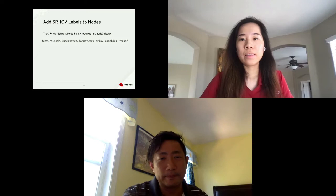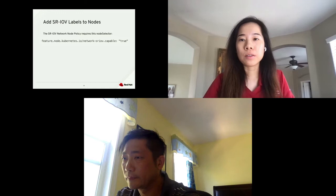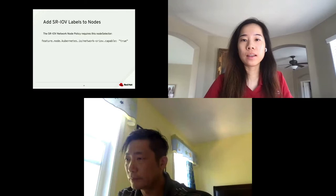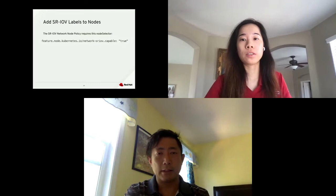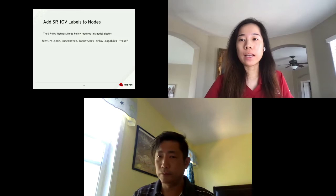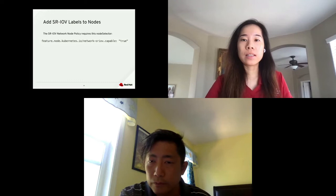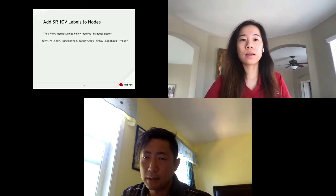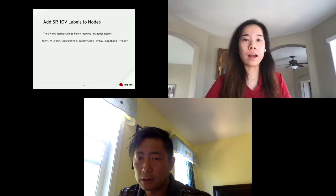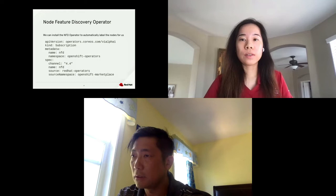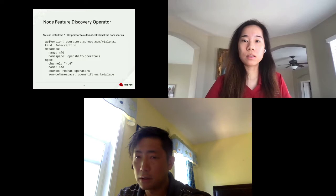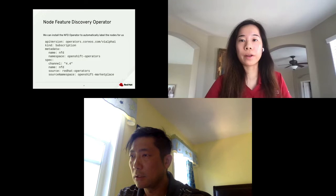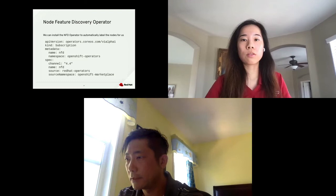Thank you, Yip, for the high level overview of DPDK and virtual functions. Yip also showed us how to install the SRIOV network operator, which is the first step in the SRIOV configuration in OpenShift. The operator is responsible for managing the life cycle of the SRIOV configurations. The SRIOV assigns a portion of the NIC to a pod so we can share the same physical NIC among multiple pods while giving the pods direct access to the network. The next step in the configuration is adding SRIOV labels to nodes. It's a good idea to install the Node Feature Discovery operator that adds custom labels on the nodes, so you don't need to add them manually.